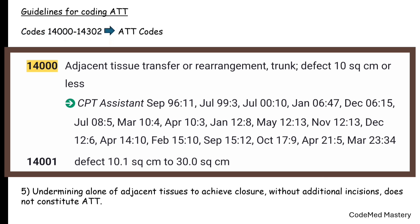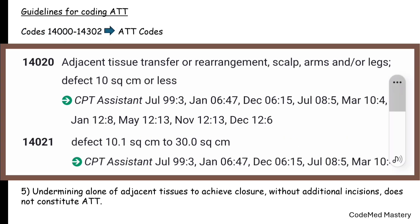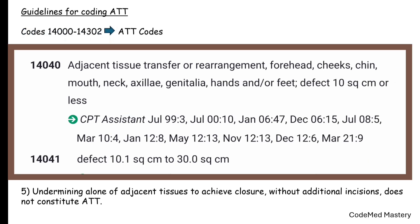Code 14020 is for ATT of scalp, arms, or legs, defect ten square centimeters or less. Code 14021 is for defect 10.1 to 30 square centimeters. Code 14040 is for ATT or rearrangement at the anatomical locations: forehead, cheeks, chin, mouth, neck, axilla, genitalia, hands, or feet — defect ten square centimeters or less. For defect 10.1 to 30 square centimeters, use code 14041.